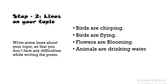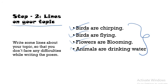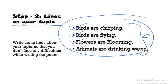Once you're done with the topic, the next step is to write some lines about your topic so that you don't face any difficulties while writing the poem. Don't just think and write it — first write some lines. Write four to five lines if you want to make a short poem, or at least ten points if you want a long poem. For that nature poem, I had written: birds are chirping, birds are flying, flowers are blooming, and animals are drinking water. These four points were written before making the poem.